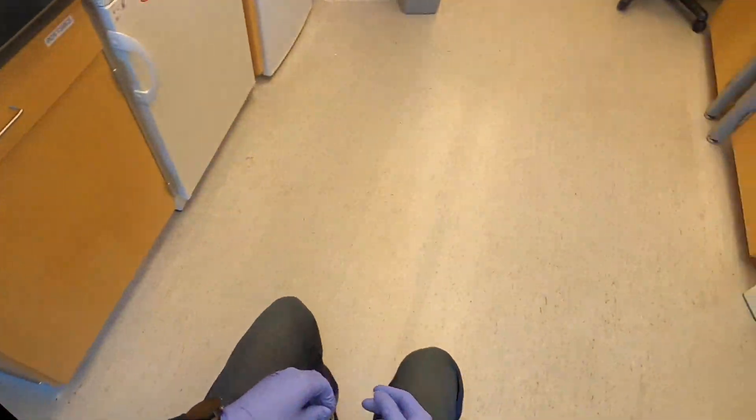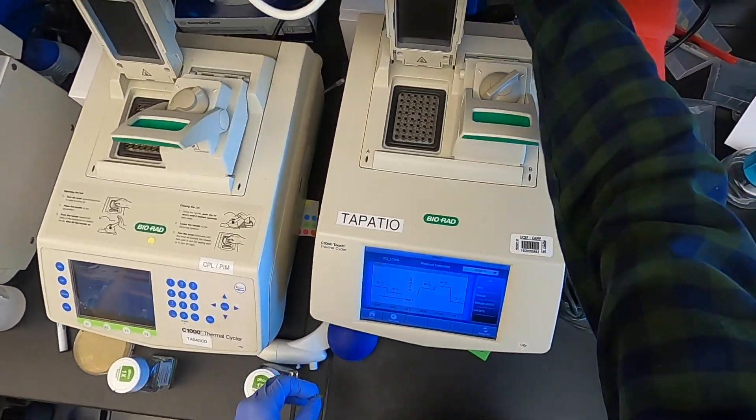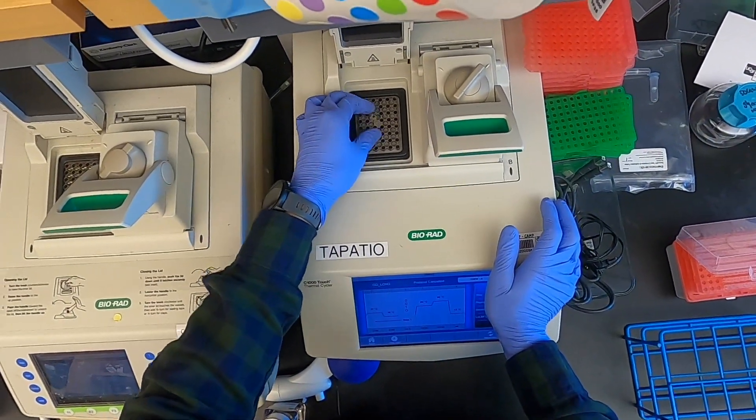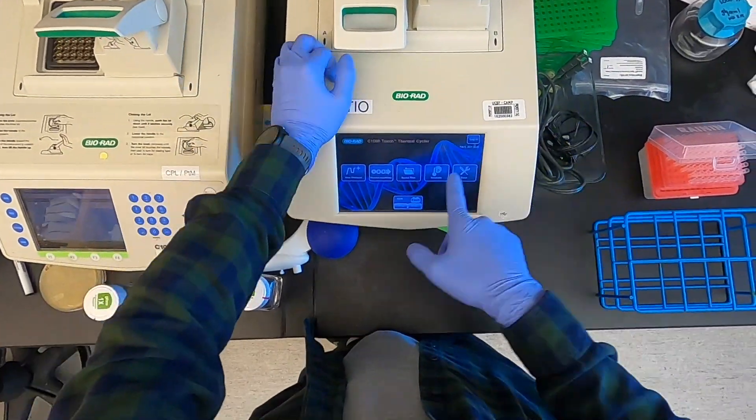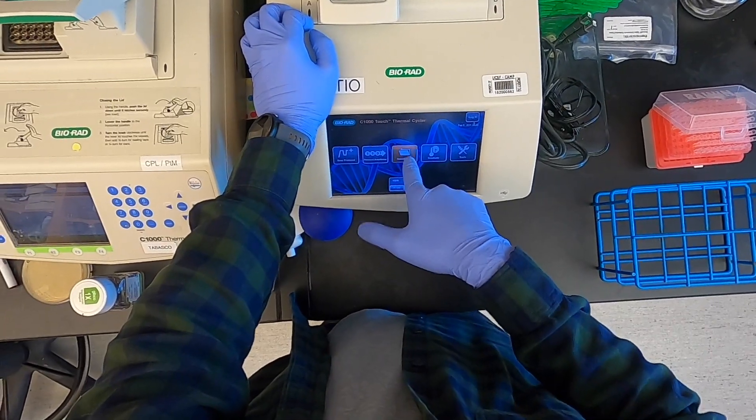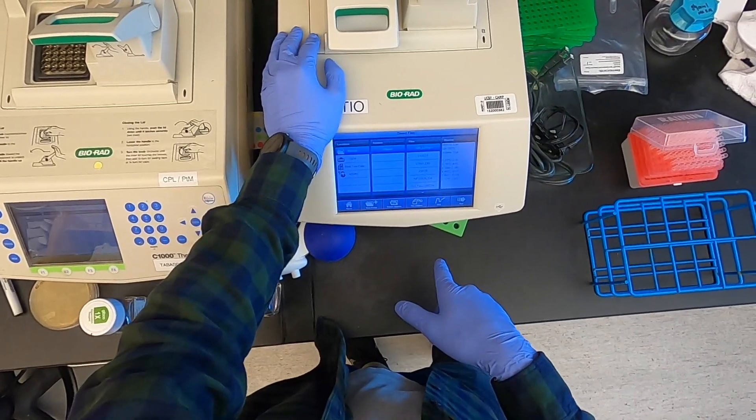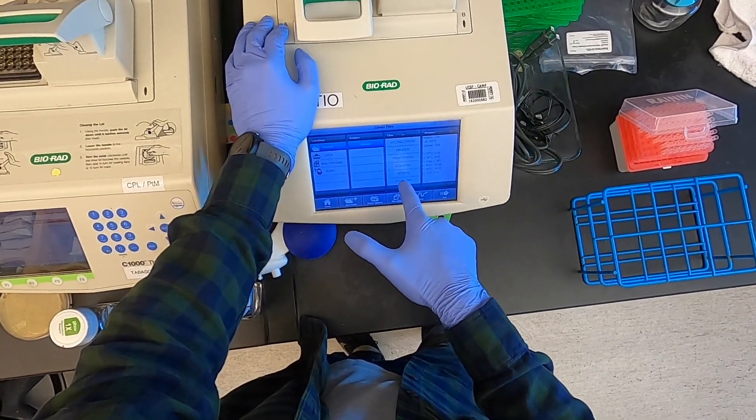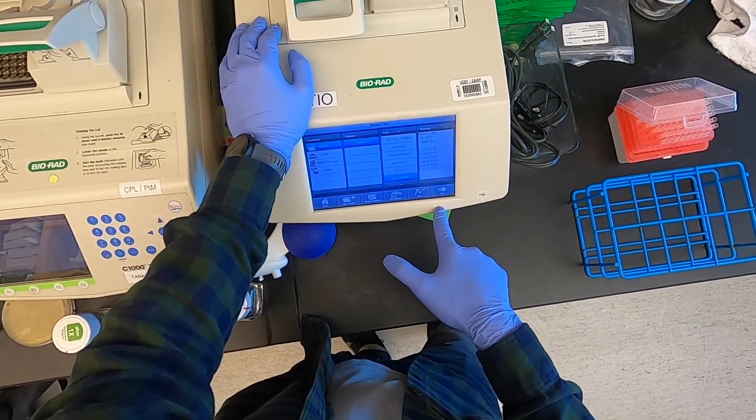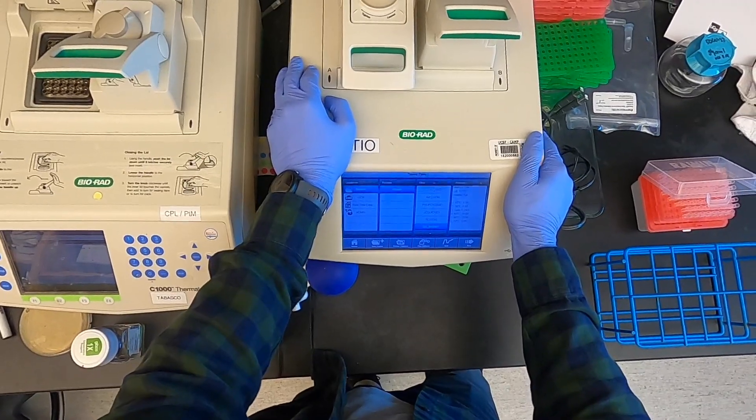And then I'm going to take this tube over to the thermocycler. 64. Today, since I am on a time crunch, I am going to run the GG short protocol, which takes about an hour. If I had more time, I would run GG long, which takes about three hours to complete but gives you slightly higher efficiency.